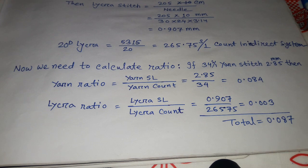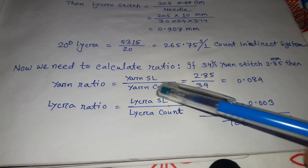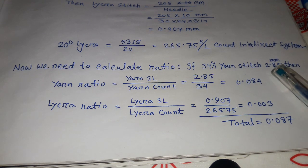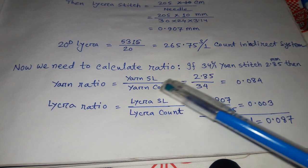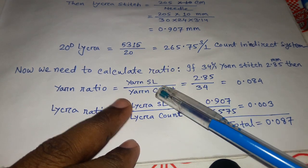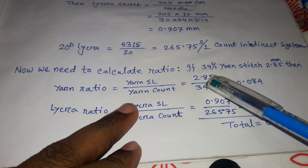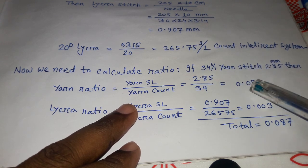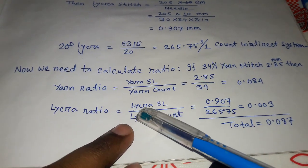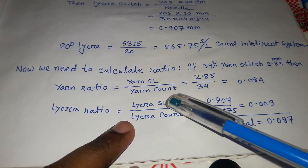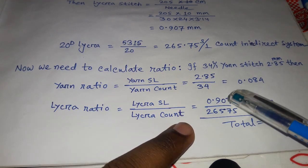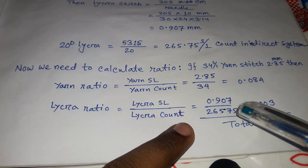Now we need to calculate the ratio. If the 34 single yarn stitch length is 2.85 mm, then the yarn ratio equals yarn stitch length divided by yarn count: 2.85 divided by 34, which gives 0.084. The lycra ratio equals lycra stitch length divided by lycra count: 0.907 divided by 265.75, which equals 0.003.